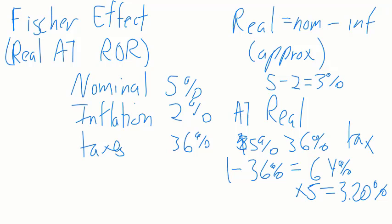Then I just subtract off inflation. 3.2% minus 2 equals 1.2%. If you actually plugged it into the formula, you would get 1.18%. So my after-tax real: deal with taxes, remove the taxes, and then subtract off inflation.